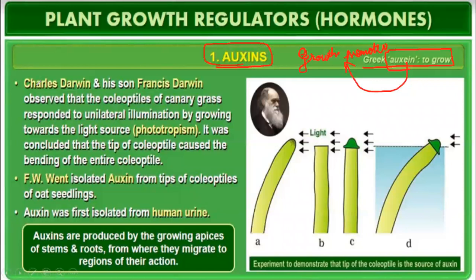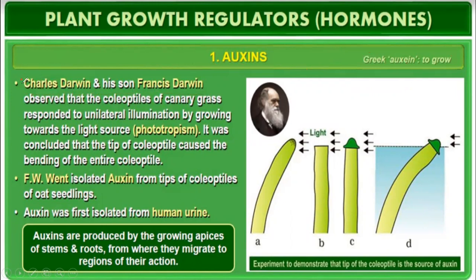Who was the scientist who discovered auxin? Very important — 100% previous year MCQ for NEET. Charles Darwin and his son Francis Darwin were the persons who found out the hormone auxin.